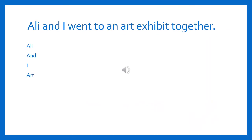This is the last sentence: 'Ali and I went to an art exhibit together.' We have four options: Ali, and, I, out. The correct answer is 'I.' I is a first person singular personal pronoun, subjective case. Pronouns are words that can be used in place of nouns. Ali is a proper noun — the name of a specific person.